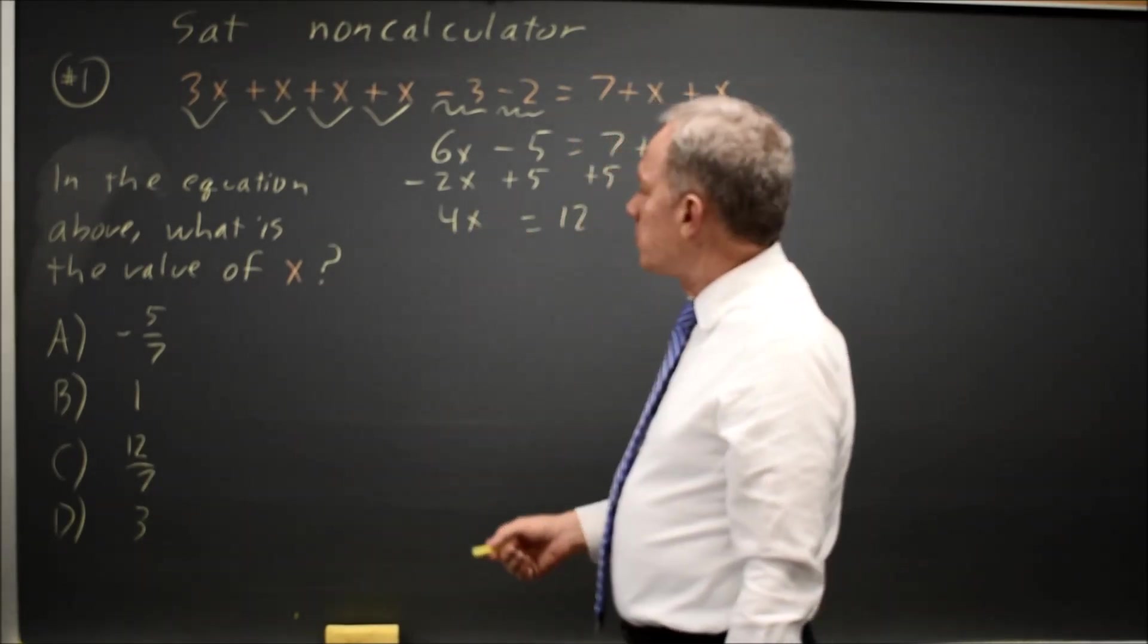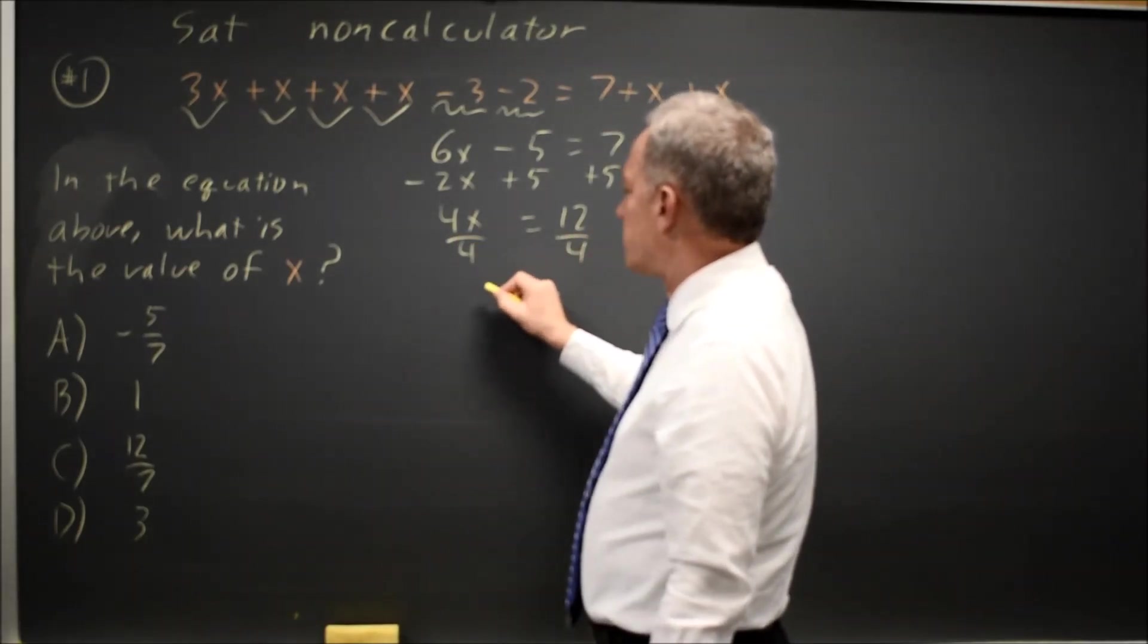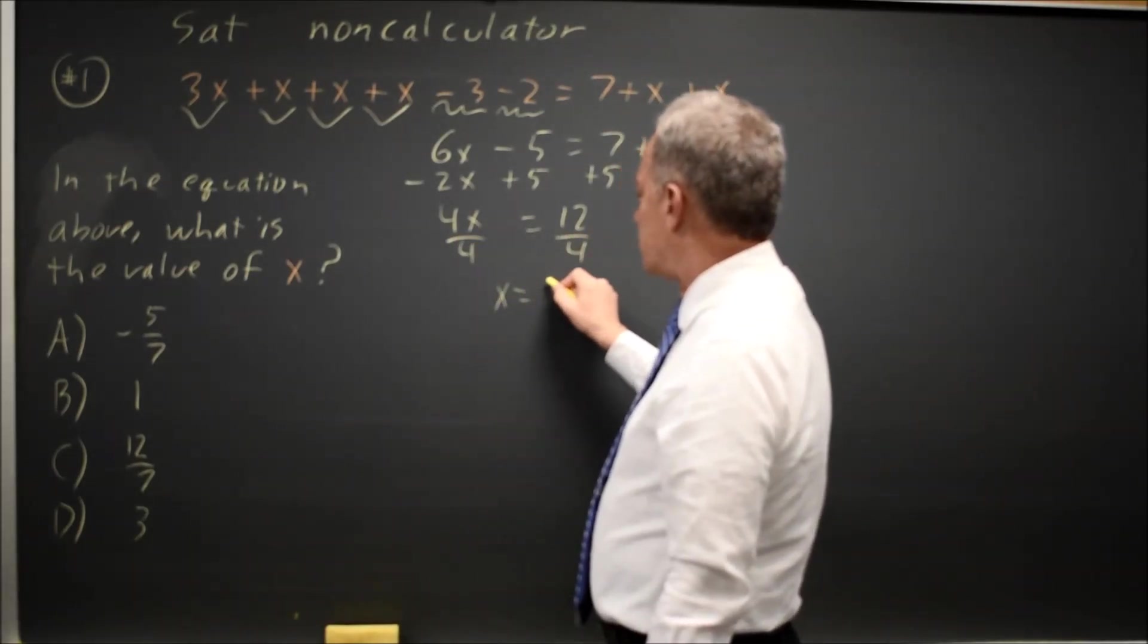To get the x by itself, since it's multiplied by 4, I'll divide both sides by 4. Always do the same thing to both sides of an equation. x equals 12 over 4, which is 3.